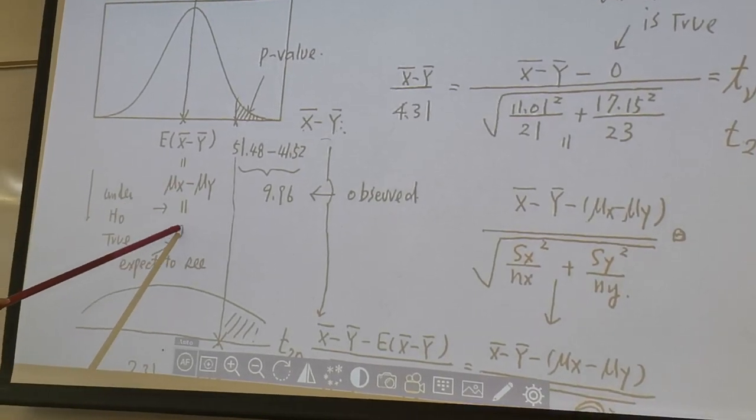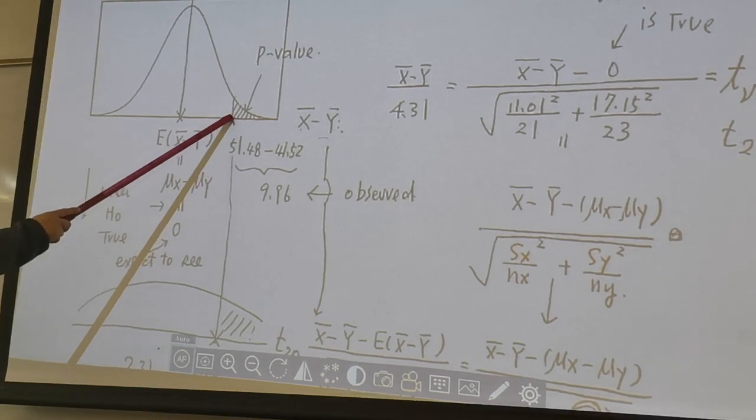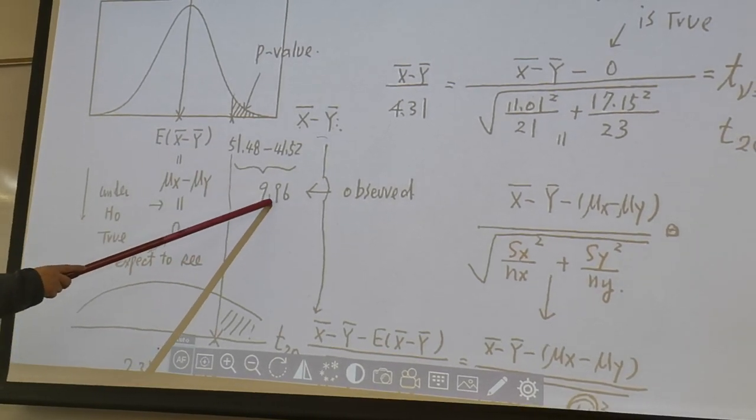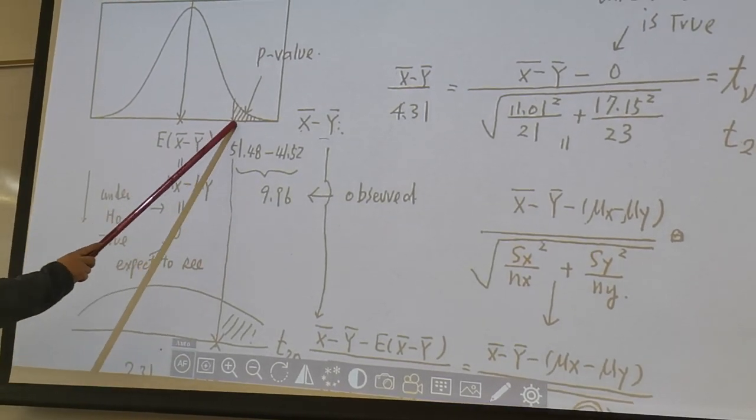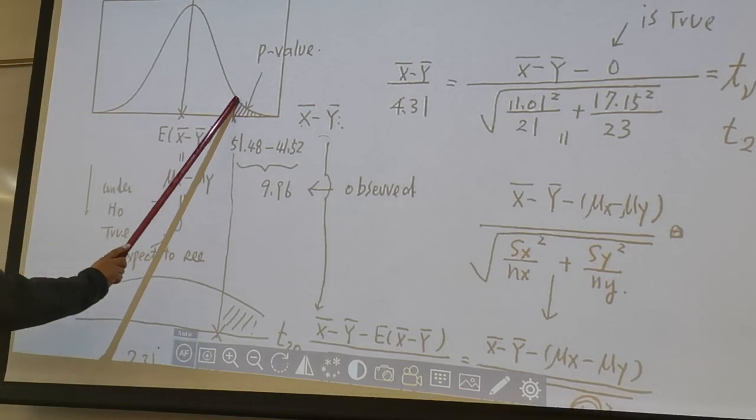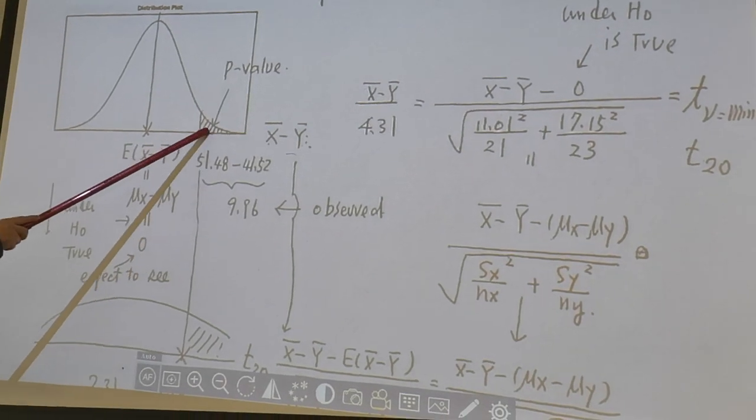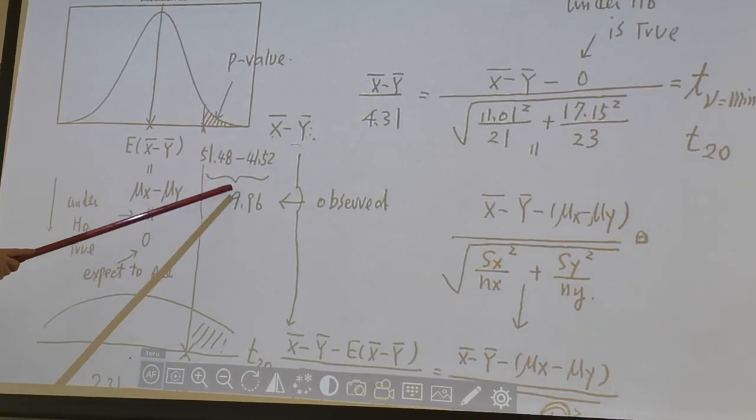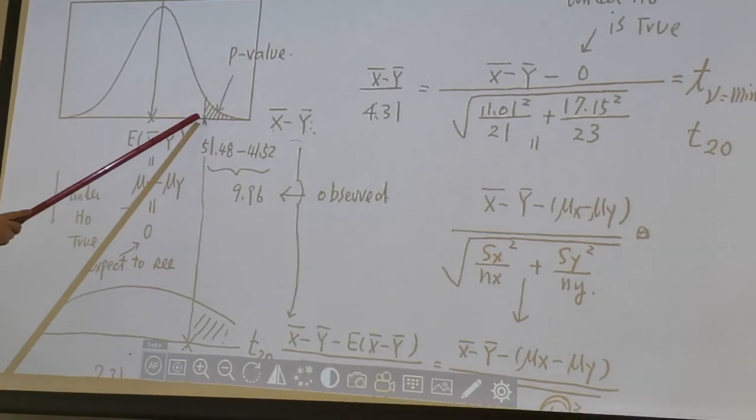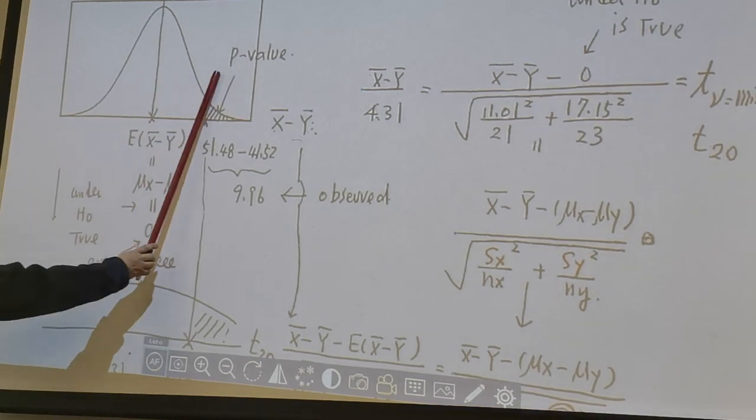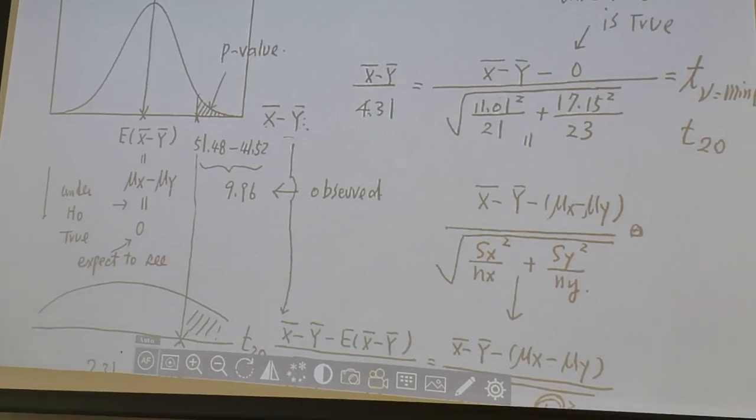So you expect to see no difference is zero. But collected data says 9.96. If further more than 9.96, this is kind of support Ha is true. Don't support H0 is true. Because under H0 is true, you expect to see this number close to zero. If this is not close to zero, then further deviate from zero. That's called extreme.